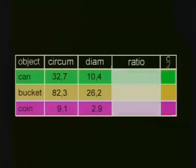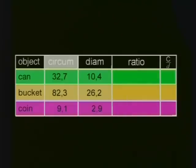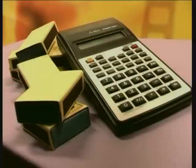We still need to complete this column of the table. It shows the relationship between the circumference and the diameter, written as a ratio. We can use a calculator to work out these ratios.